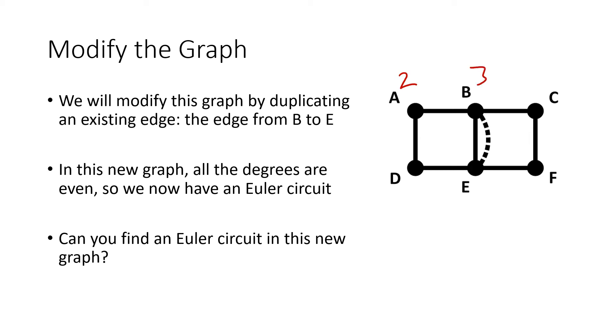Well, remember, before we did this, the degrees were 2, 3, 2, 2, 3, 2. But now that we've duplicated this edge, the degree of B is now 4, because we added a new edge that goes into B. And instead of being 3, the degree of E is now 4, because we added a new edge that goes into E. And now all the numbers are even, which means we can find an Euler circuit for this graph.